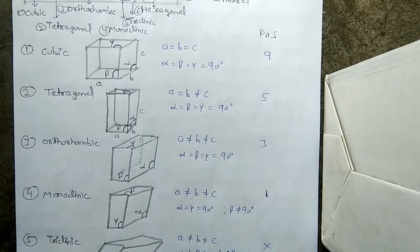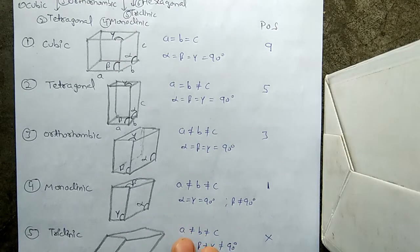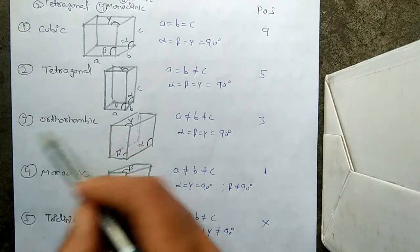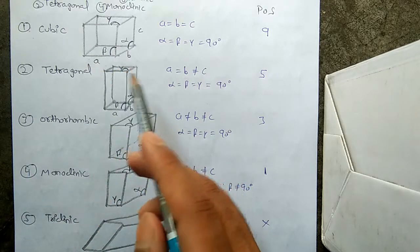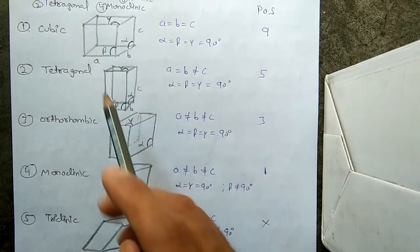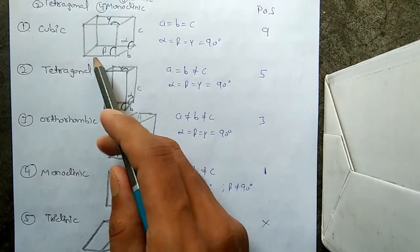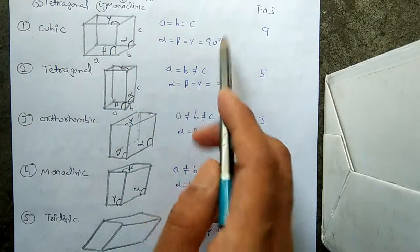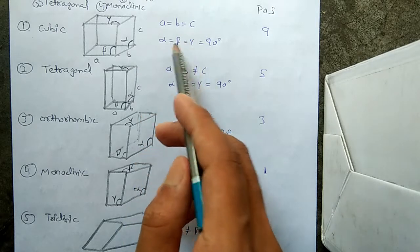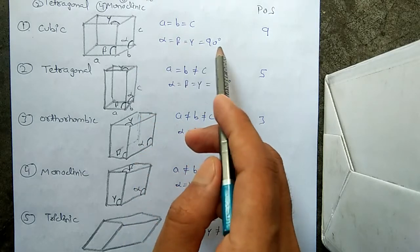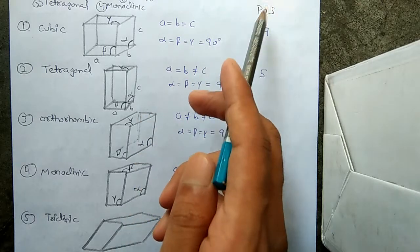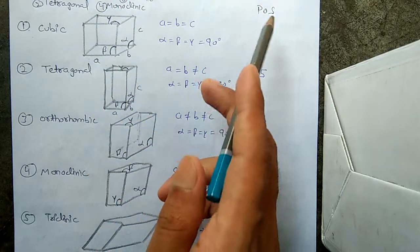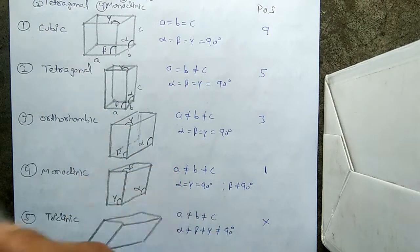The first one is the Cubic system. As the name suggests, it will be a cubic shape. In this system, all three sides a, b, and c are the same length. All three angles alpha, beta, and gamma are 90 degrees. This system has nine planes of symmetry.